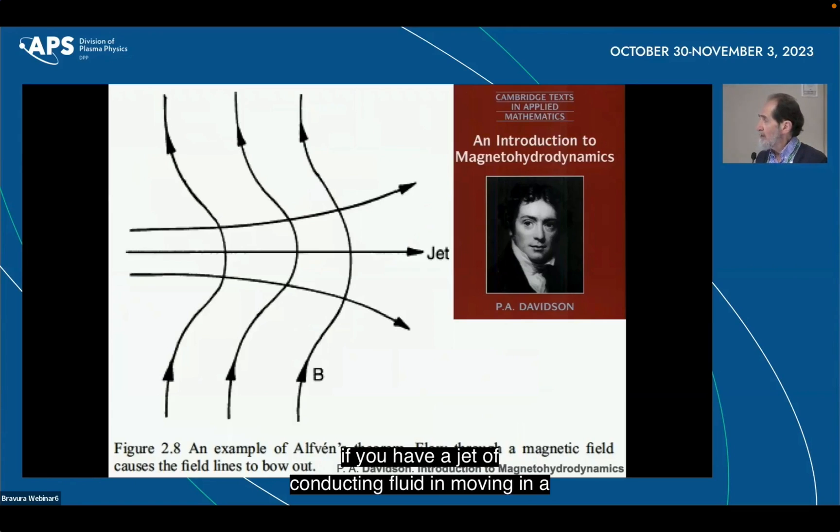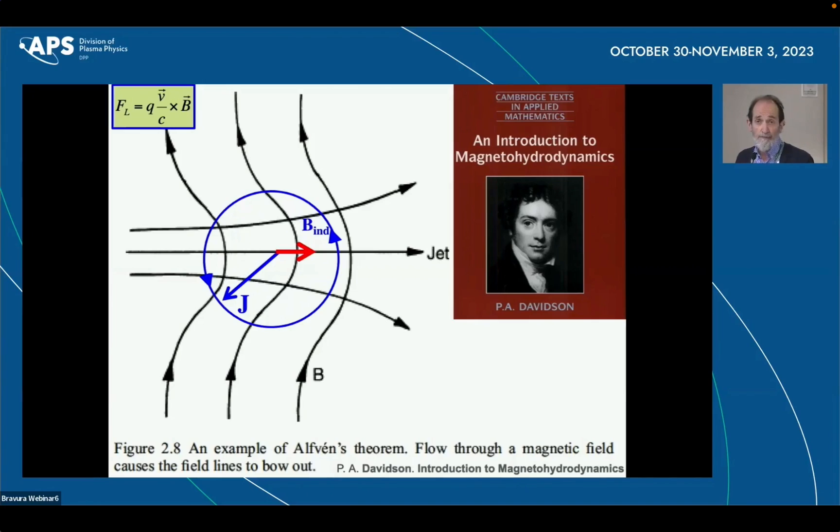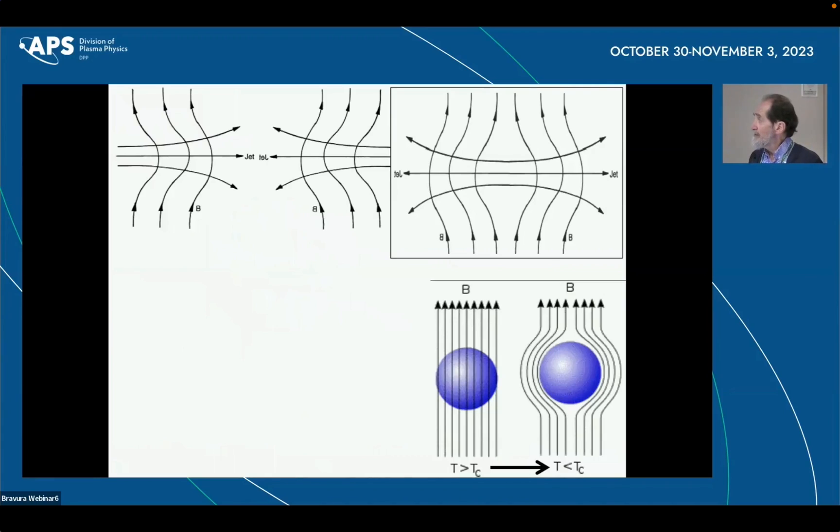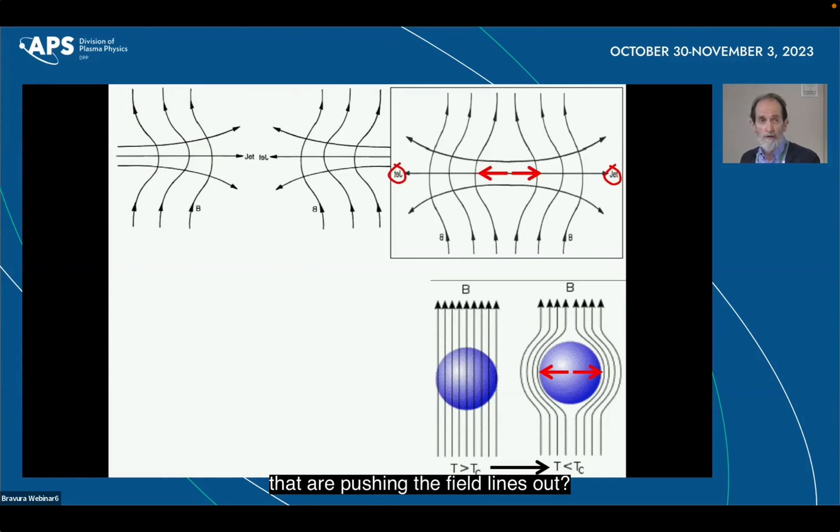If you have a jet of conducting fluid moving in a magnetic field, as you know, because of the Lorentz force, there is a current that gets induced perpendicular to the motion of the fluid, and that generates a magnetic field that superposes to the initial field and bends the field lines. So let me take a picture, flip it around, and put it next to each other, and they look kind of similar. So if there are jets in the top picture that are bending the field lines, how about thinking about jets here that are pushing the field lines out?